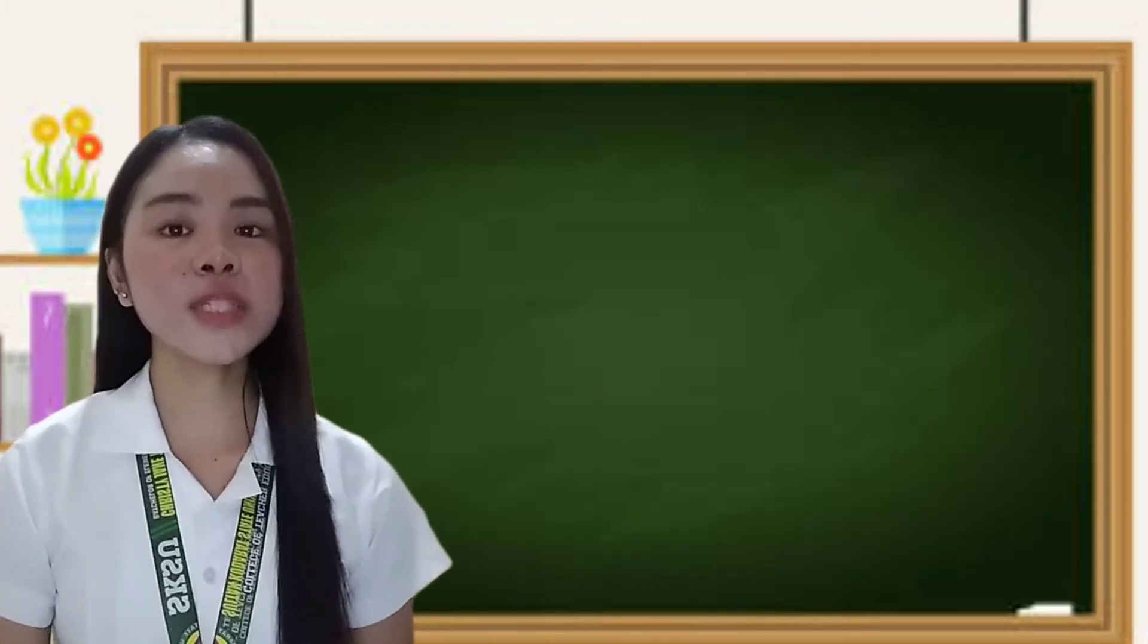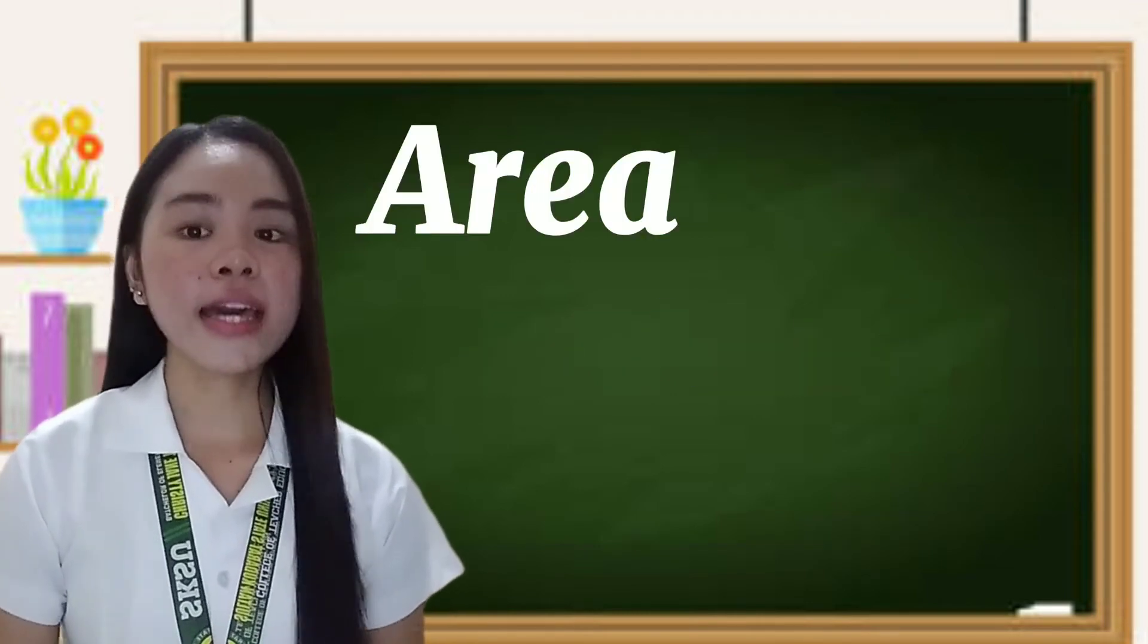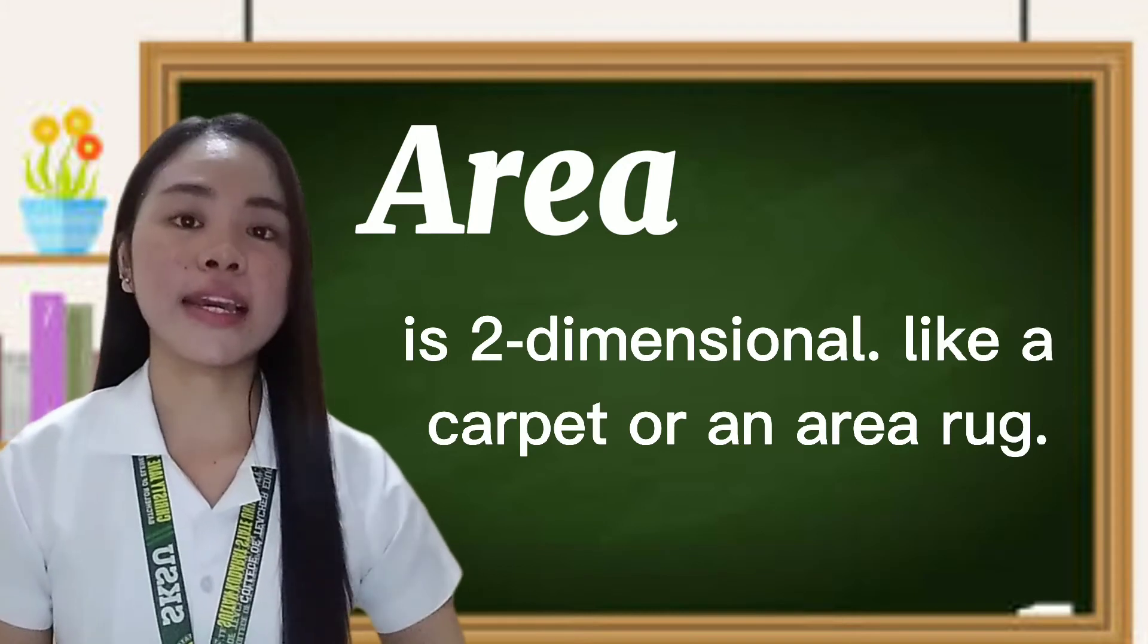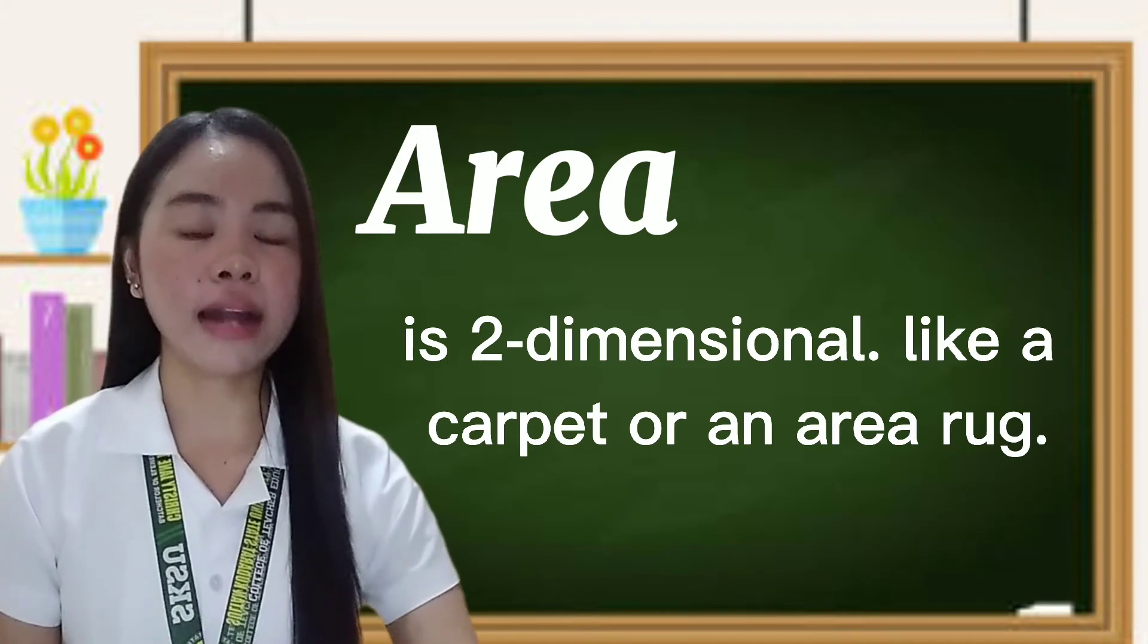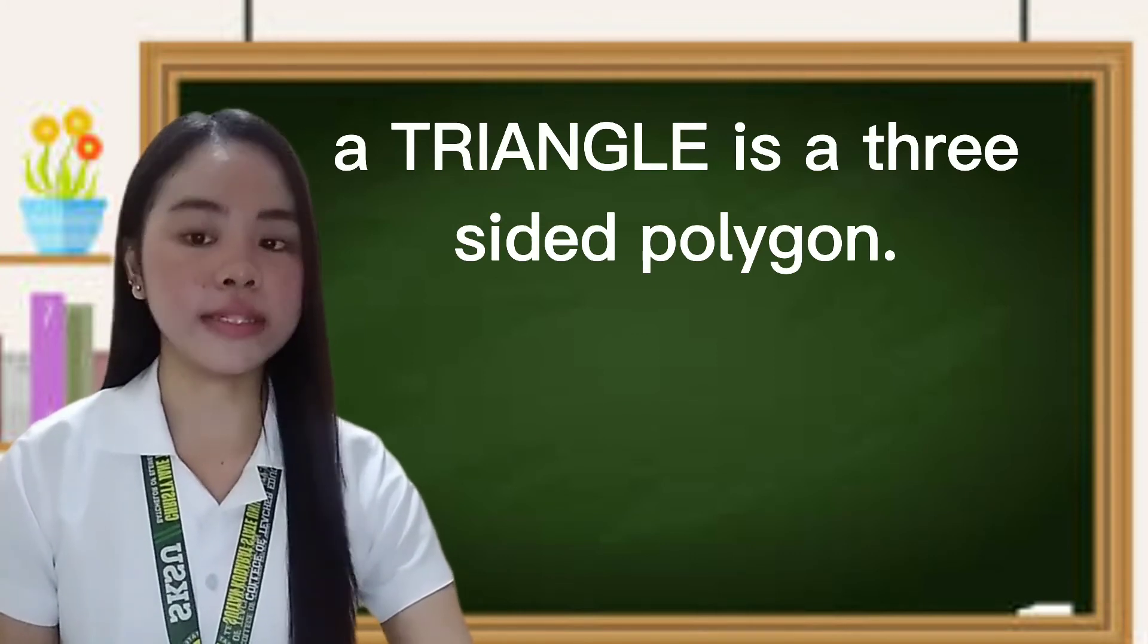So now, let's proceed to our discussion. What is an area? Area is two-dimensional like a carpet or an area rug. What is a triangle? A triangle is a three-sided polygon.